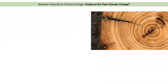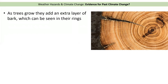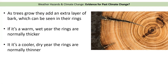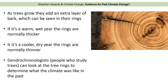The second piece of evidence is tree rings. As trees grow they add an extra layer of bark, which we can see as rings when we cut the tree open. Typically, if it's a warm and wet year the rings are much thicker, but if it's a cooler drier year the rings are much thinner. By counting back the years you can identify colder or warmer periods. People who study trees — dendrochronologists — can look at tree rings and work out what the climate was like in the past.